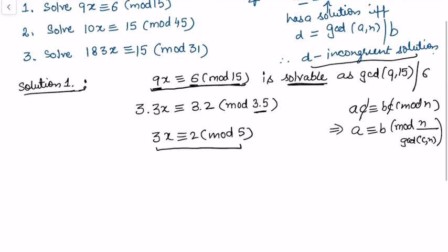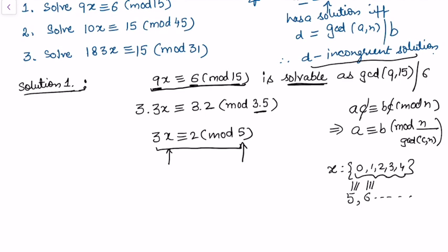Now we want to find the solution of 3x ≡ 2 (mod 5). We will try this by trial. Since the modulus is 5, the choices for x are 0, 1, 2, 3, 4. Any value beyond that is congruent to one of these — for example, x = 5 is congruent to 0, x = 6 is congruent to 1. So we only need to check the least non-negative choices.